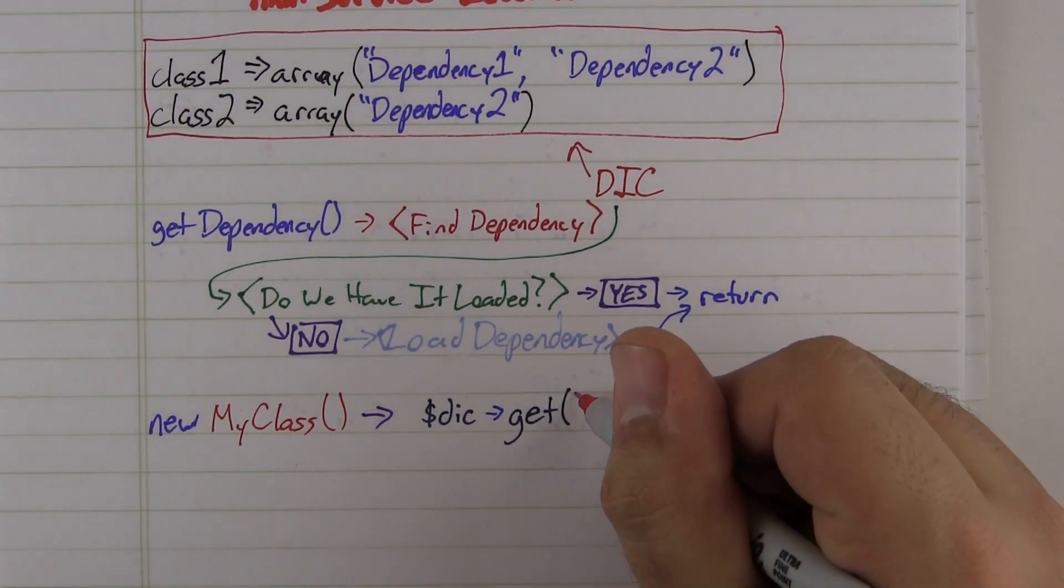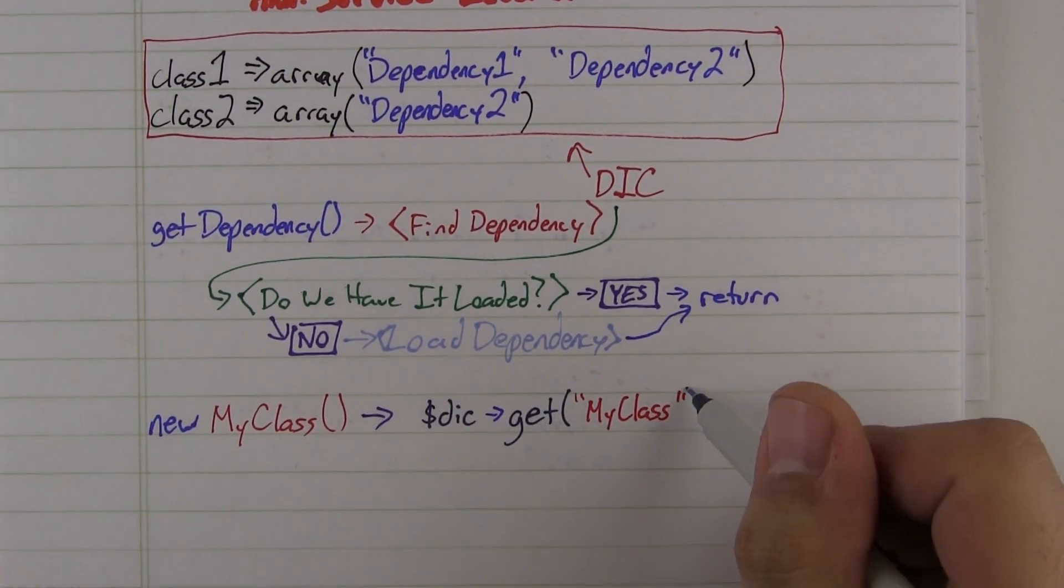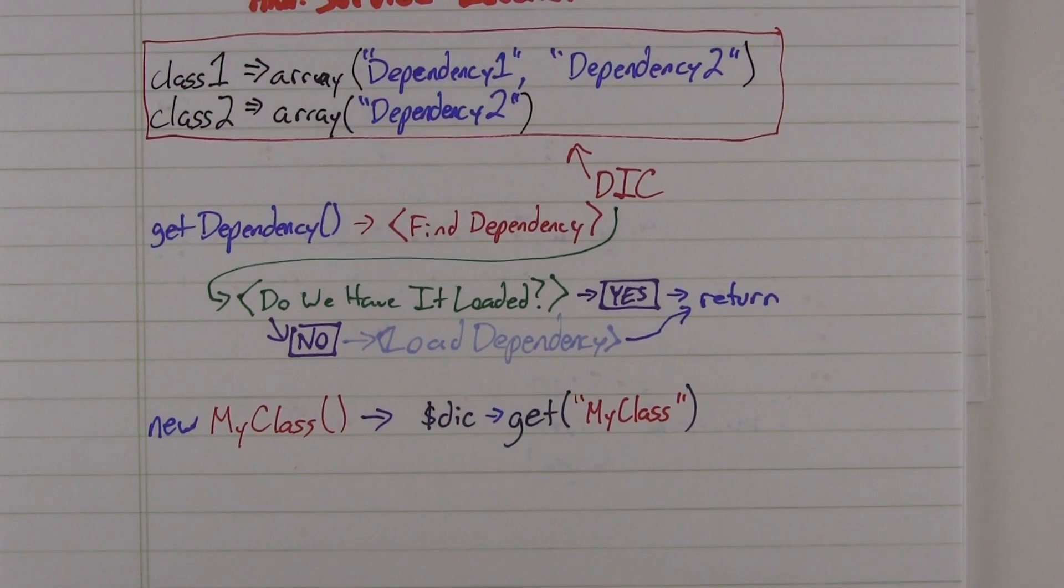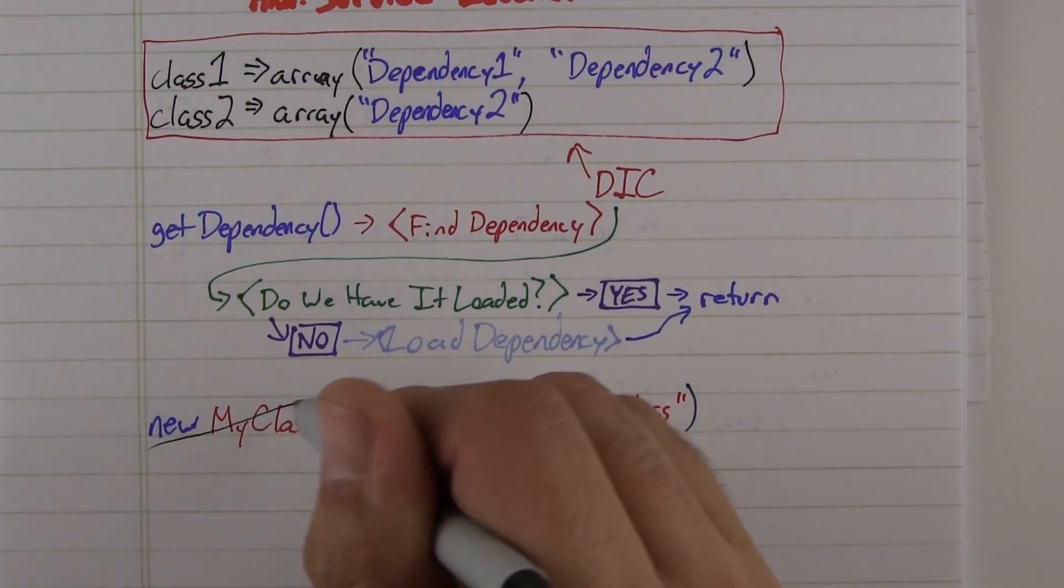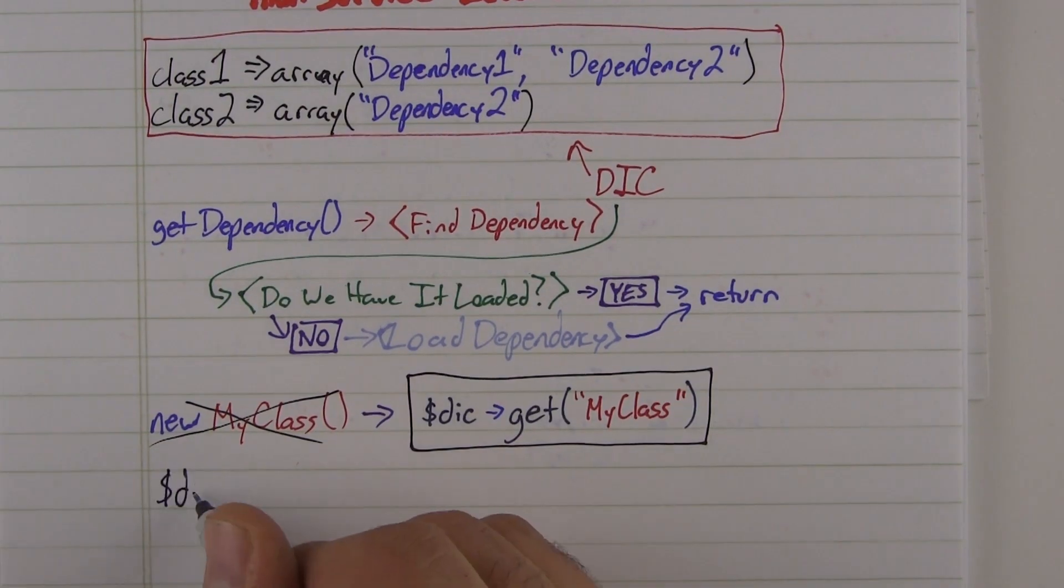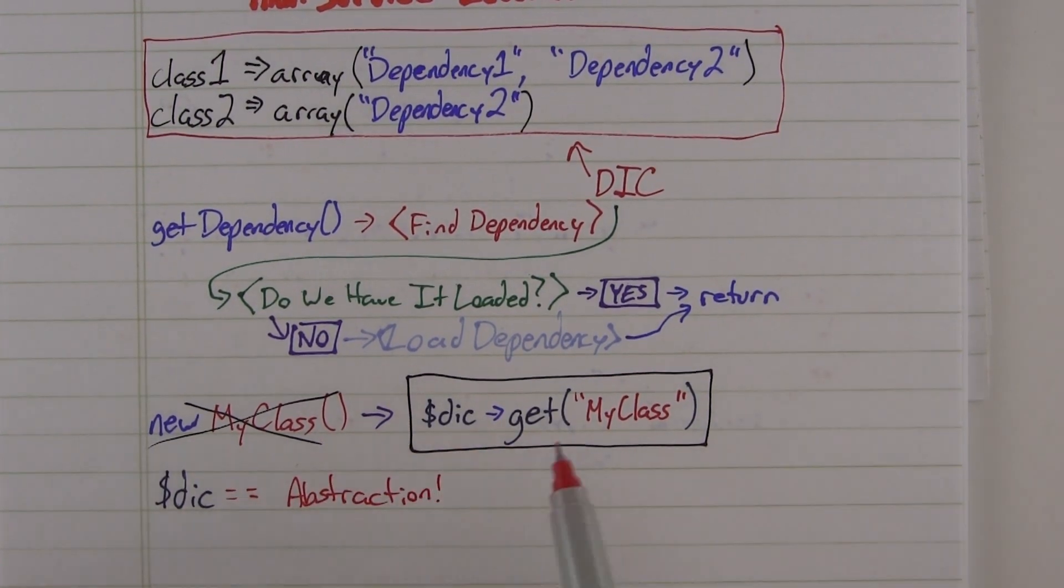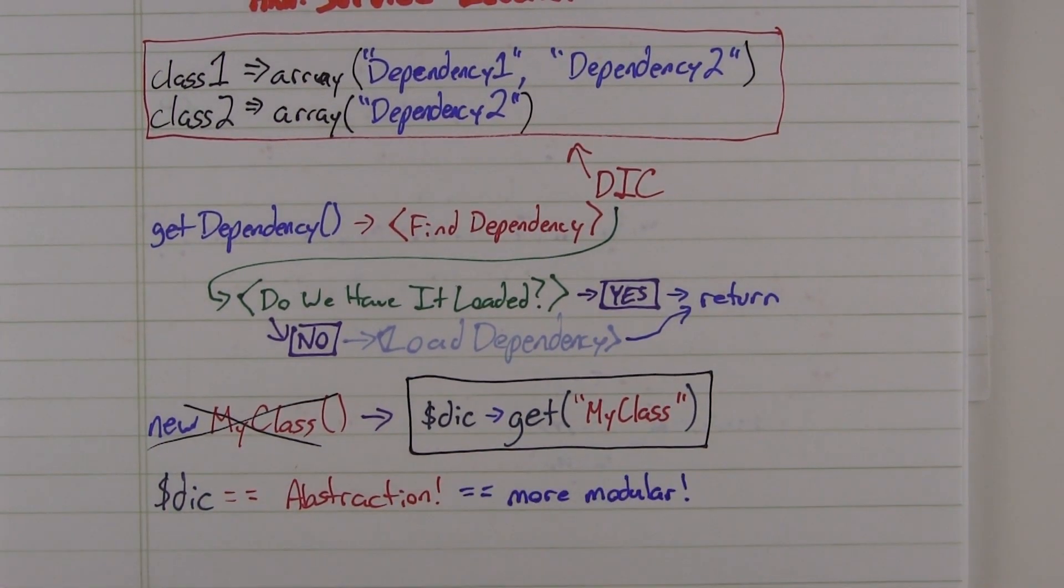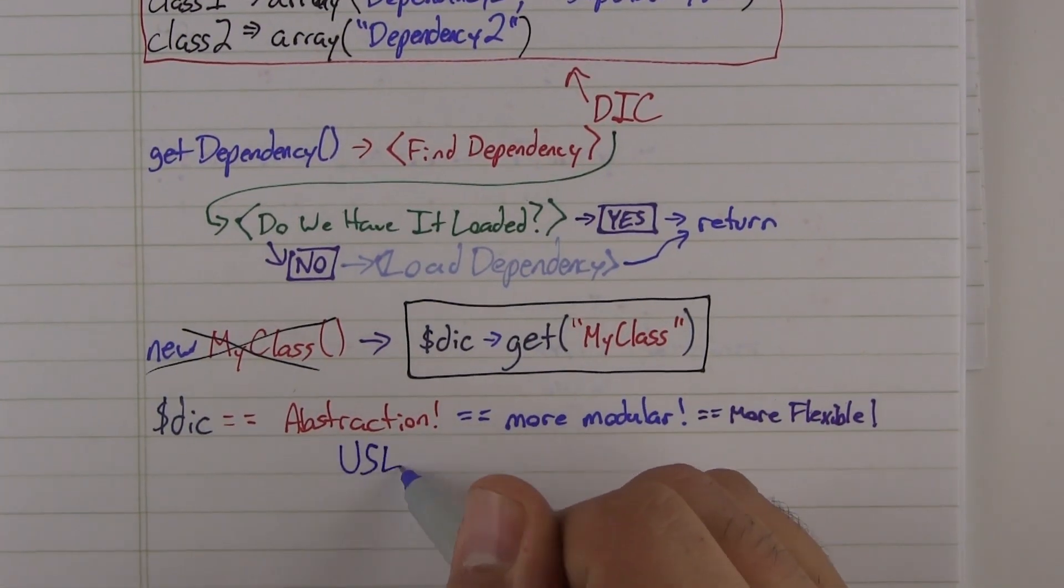The best part of it is that the container can resolve complex dependencies transparently. And if you want to swap out a generic dependency, you only need to update the container. So write cleaner and more modular code. Use dependency injection.